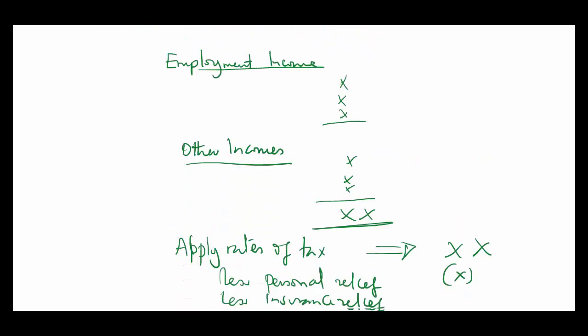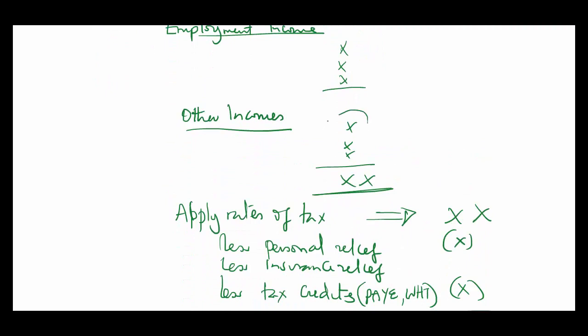Remember that if you make losses in any of these other categories, you cannot offset them against employment income. So if you have a business loss, for example, then that loss can be carried forward to the next period, but that does not mean that you shall get a refund for what you paid as PAYE on your employment income.